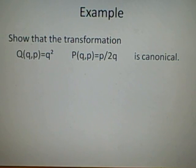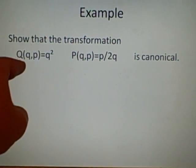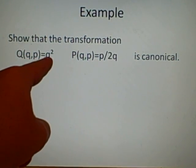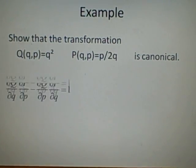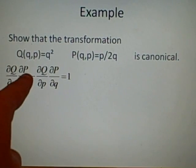Right, example: show that the transformation Q(q,p) equals q squared, and P(q,p) equals p over 2q is canonical. Right, so we've got to use this equation here, which I said before.